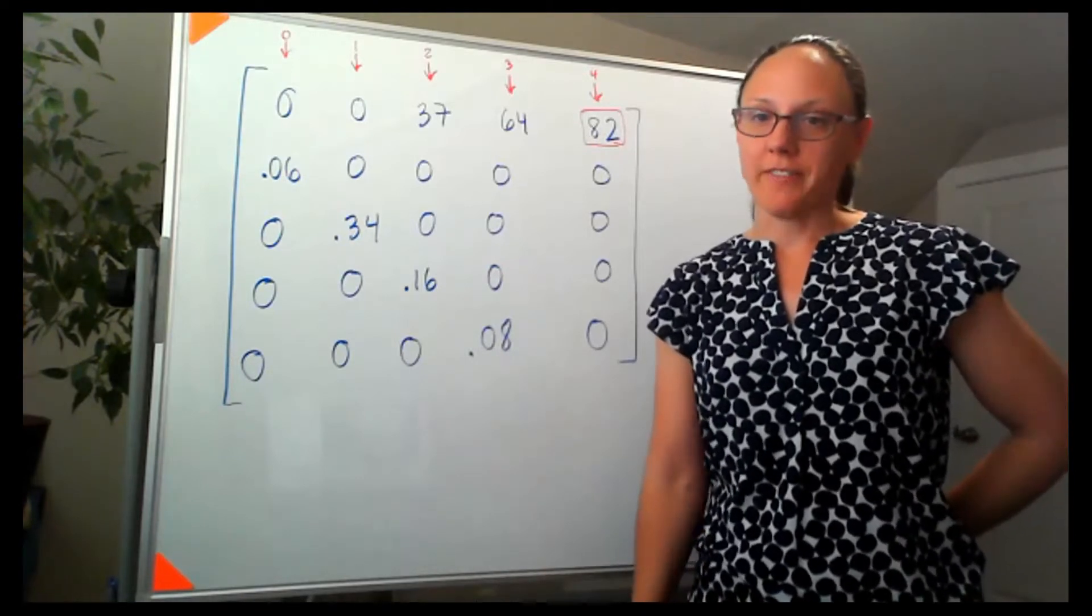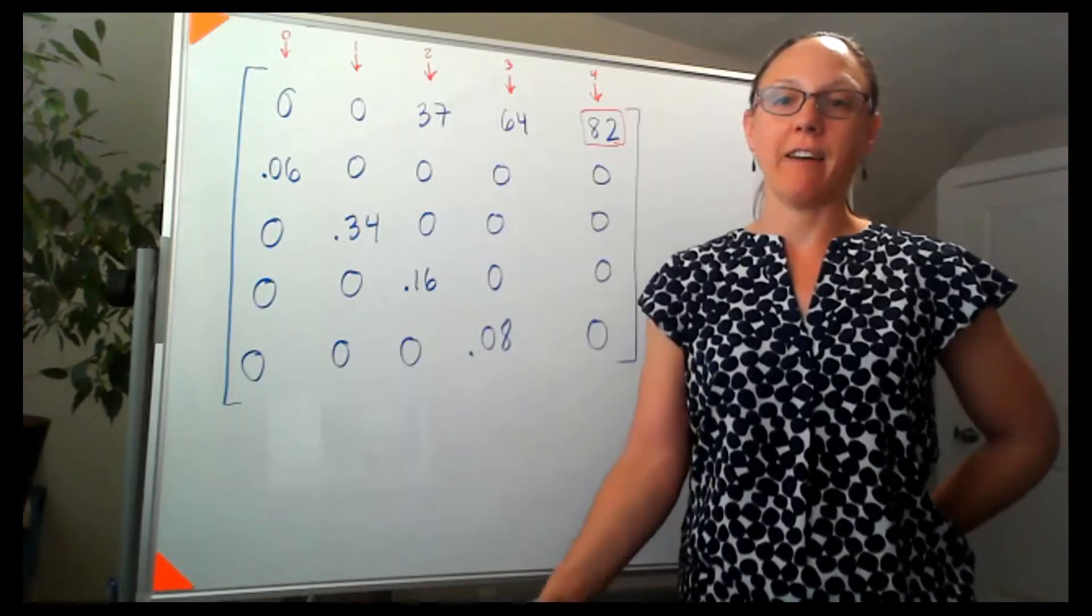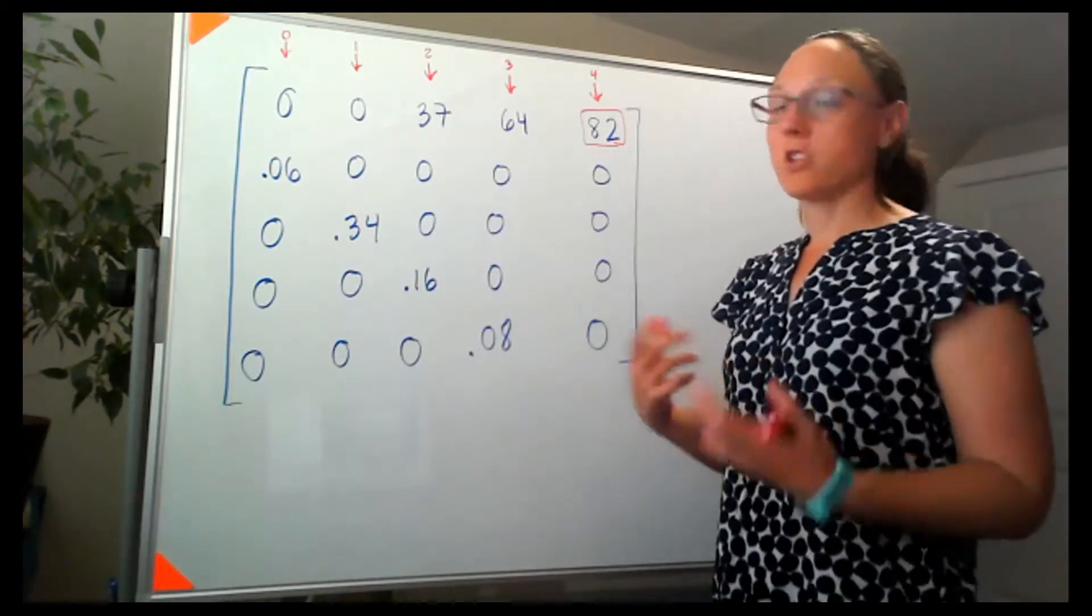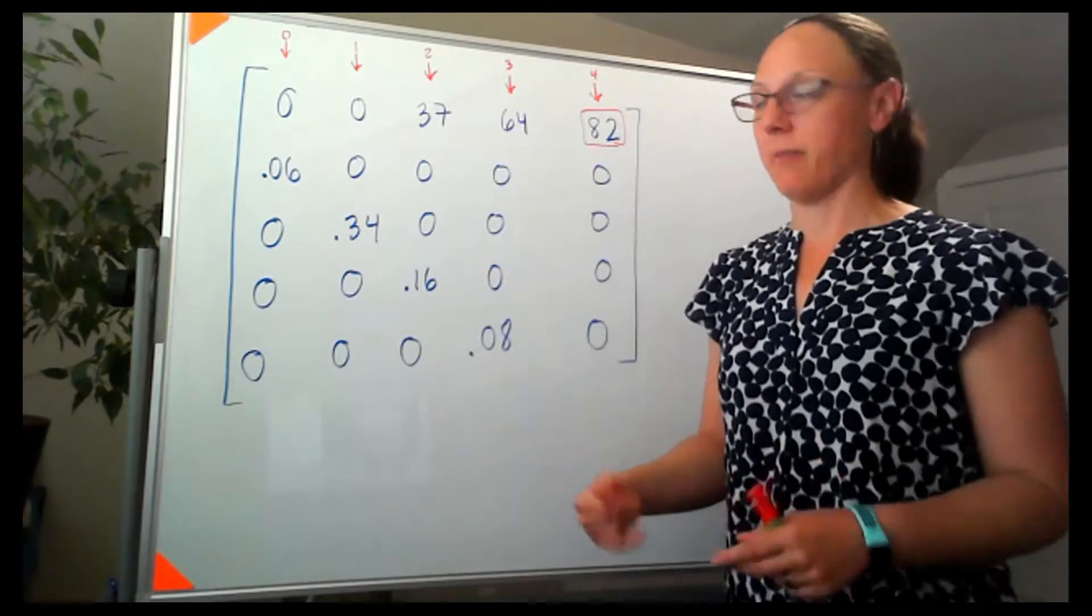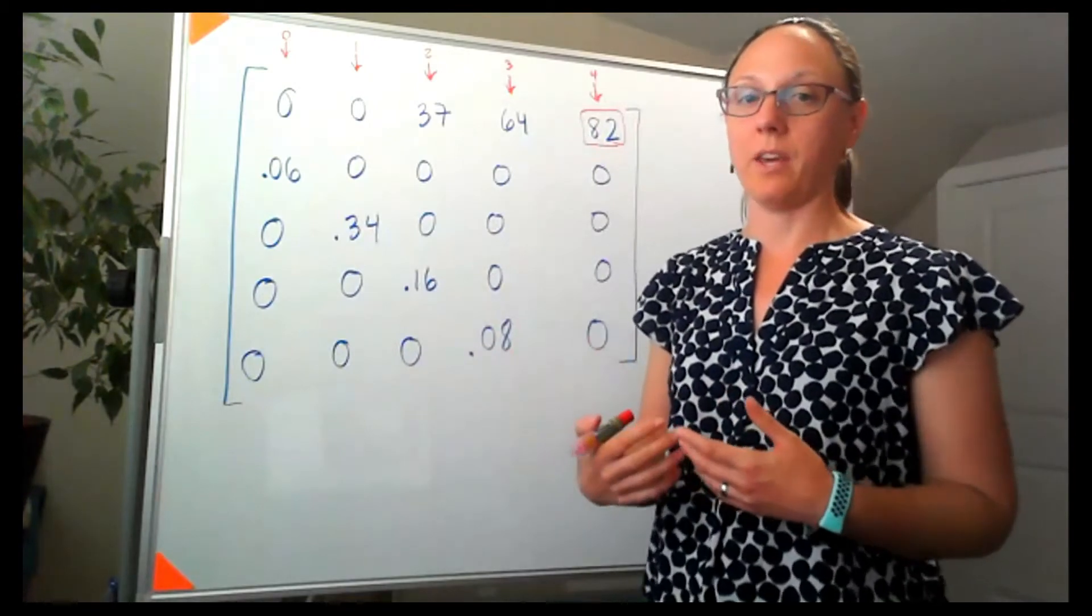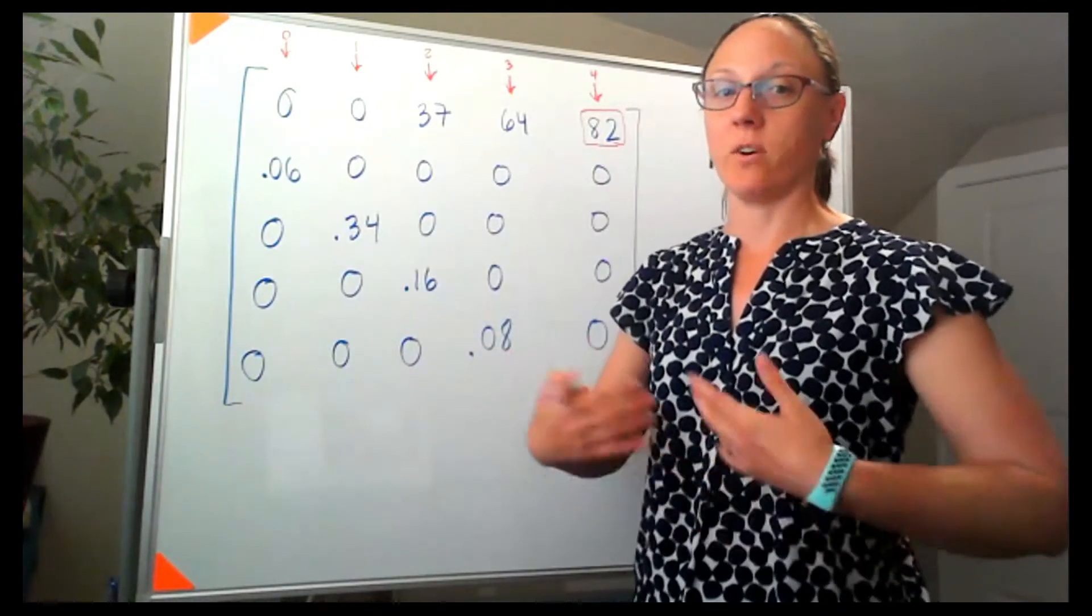So my next question on there, what percentage of age class two individuals survive to age class three? So there are two ways that I can find that. I can either think about each of these rows as telling me what's happening in each age class next year.